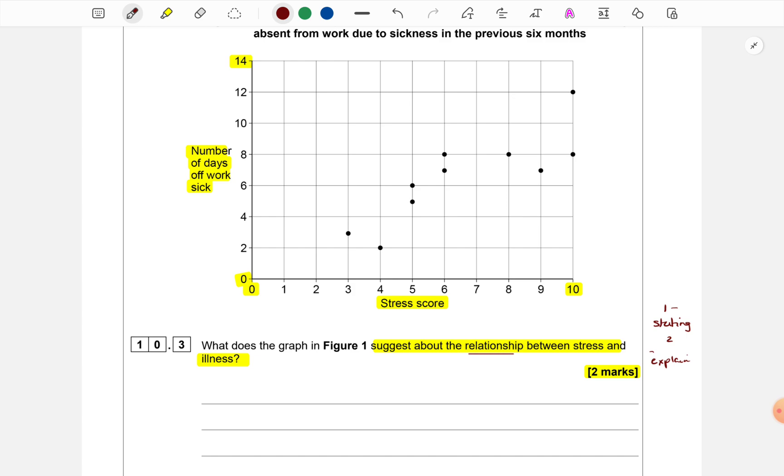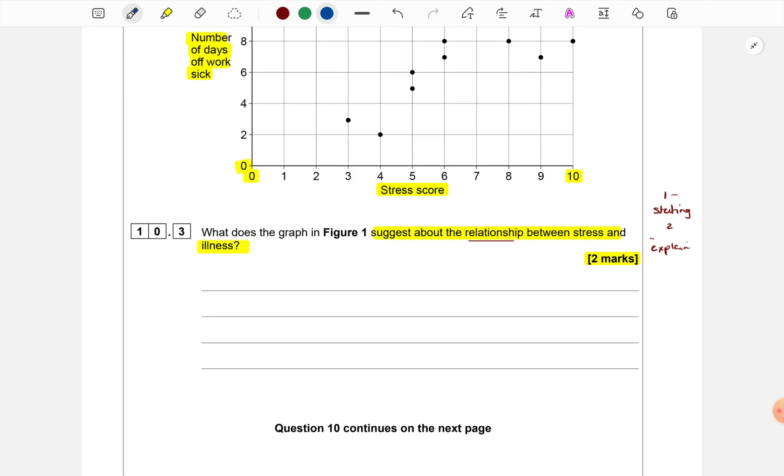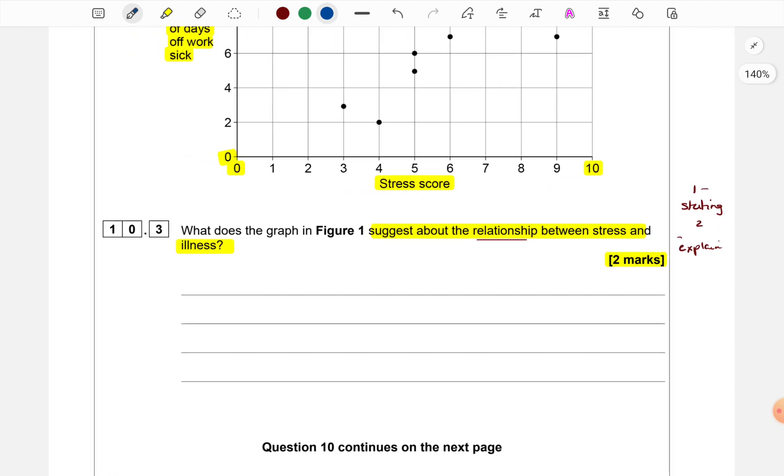Positive relationship means as the value of one variable increases, the value of the other variable also increases. That is correct. But why do you think they have printed an entire graph and given to you in the paper if they just wanted a general answer like this? Okay, so make sure you write correctly. So, how we should write the answer is taking the wording from the question.